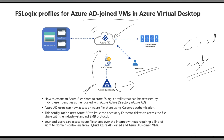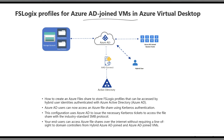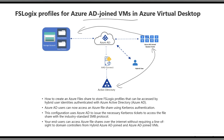As of today, to use FSLogix profiles in Azure AD joined VMs, the user must be a hybrid user. Cloud-only users are not supported — this is a current limitation, though Microsoft is working on it. Importantly, you no longer need any line-of-sight connectivity with your Active Directory to authenticate and access the FSLogix profile share in Azure Files.